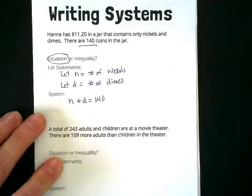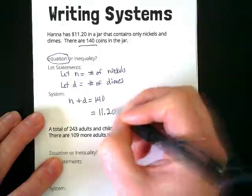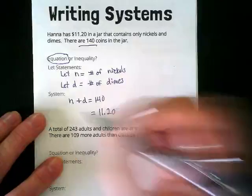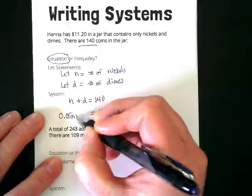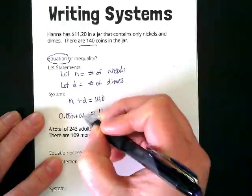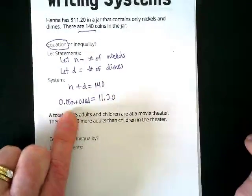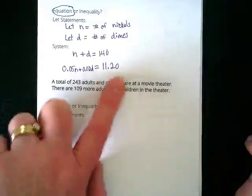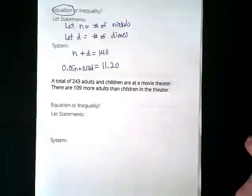What's the other important information from the first sentence? She has $11.20. So, the second equation equals $11.20. How much are nickels worth? 5 cents. So, it's going to be 0.05n plus 0.10d. We know that the value of nickels is 5 cents. We know that the value of dimes is 10 cents. And we know that the total is $11.20. That's a system of equations.